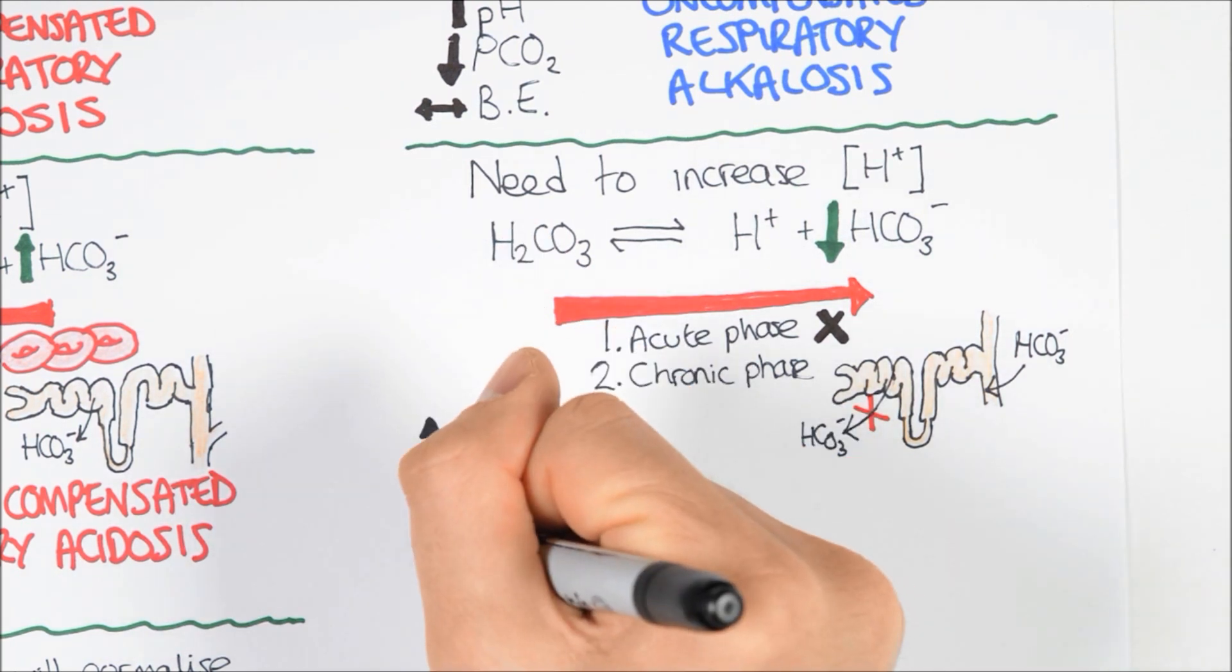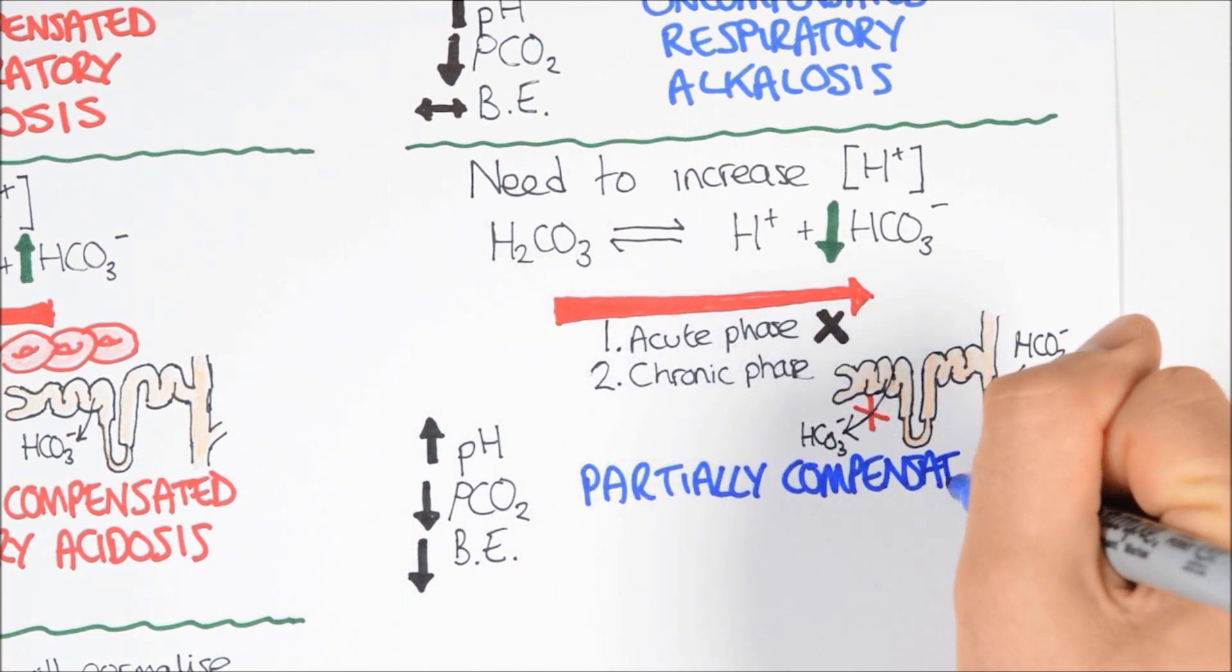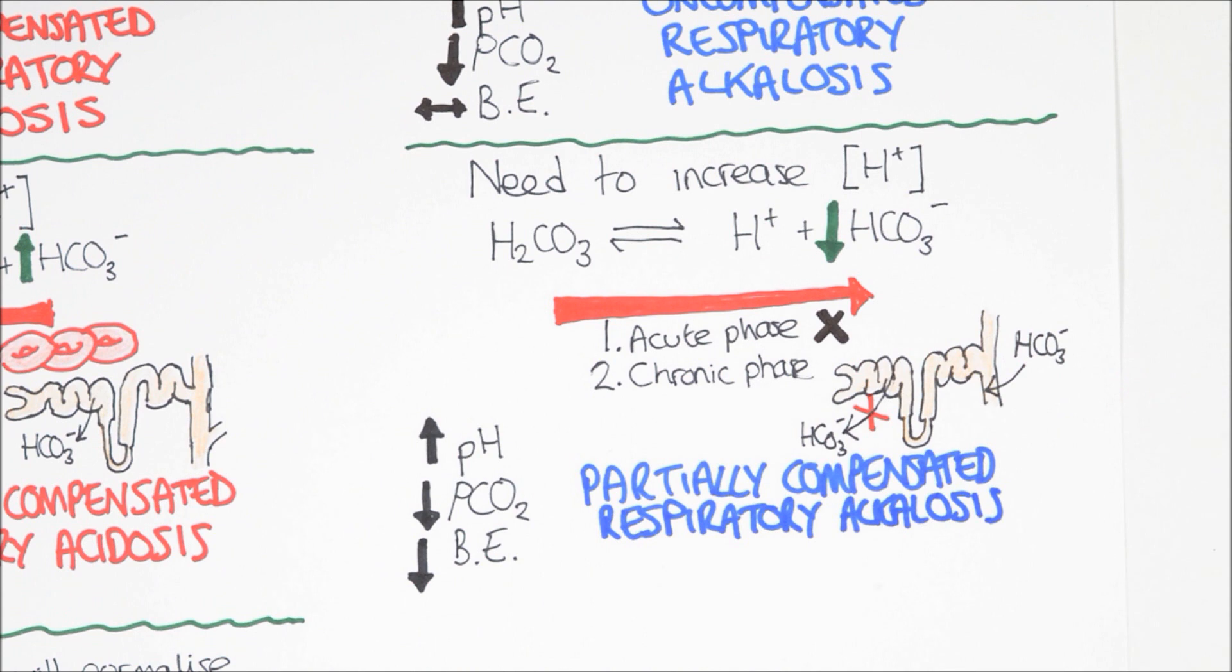As a consequence, pH will still be higher than normal, PCO2 will be abnormally low, and base excess will also be low. This is because of the increased bicarbonate excretion. This patient is now in a state of partially compensated respiratory alkalosis.